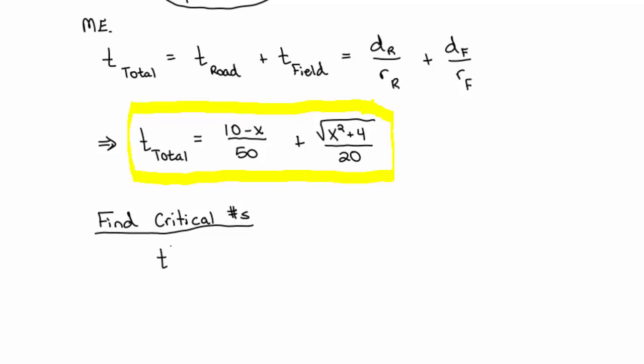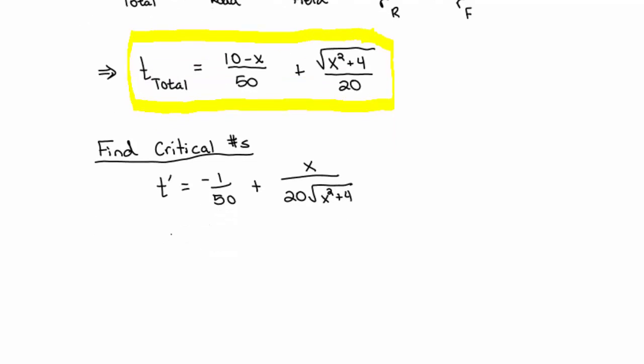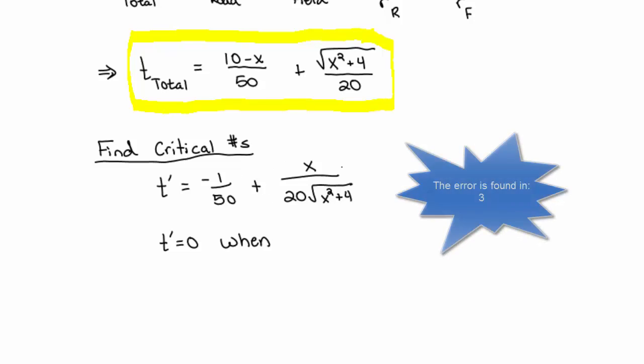That involves taking the derivative of this function t. t prime is equal to the derivative of the first term, negative 1/50. The derivative of the second term is x over 20 root x squared plus 16. Critical numbers occur when your derivative is 0 or undefined. This derivative is always defined.